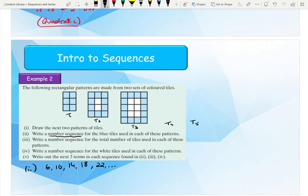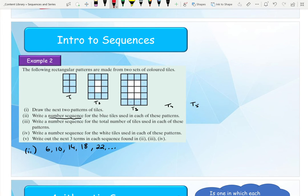And the reason why I can guess that is because I can see that this is a linear pattern where it goes up by 4 each time. So it's a linear pattern or a linear sequence where it's going up by 4 each time.